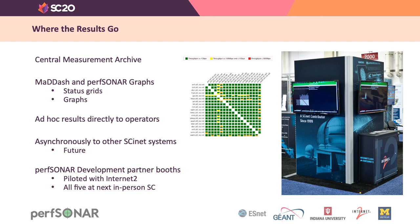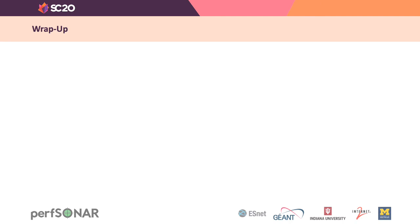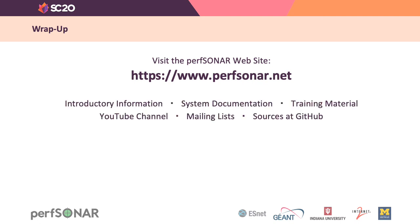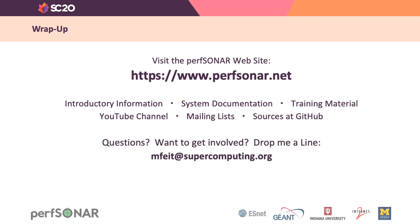All of the measurement results are fed to a central measurement archive. That archive feeds MadDash and the PerfSonarGraphs package, which show grids with the network status — a quick, easy way to see the state of a particular service on the entire network. Network operators doing ad hoc tests get their results immediately. Something we've been doing in recent years is syndicating the PerfSonar information to the PerfSonar development partner booths. We've been doing it for the last couple of years with Internet2, and we hope to do it with all five at the next in-person conference. If you'd like more information, please visit www.perfsonar.net. If you have questions or would like to get involved, please drop me a line at mfeit@supercomputing.org. Thanks for listening, and I hope you found it informative.